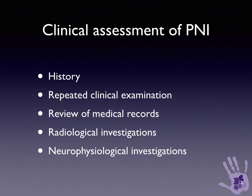When we assess a peripheral nerve injury, we want to take a history and perform repeated clinical examination. Other useful tools include reviewing medical and anaesthetic records, radiological investigations, sometimes ultrasound of a peripheral nerve, and neurophysiological investigations. But most of what we need to determine the need for surgical intervention can be gleaned from the history and repeated clinical examination.